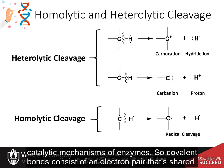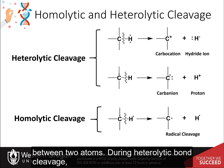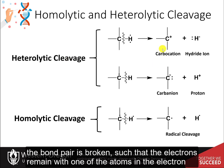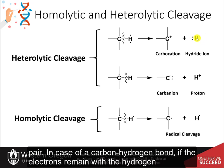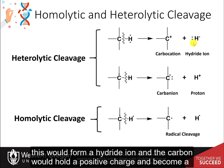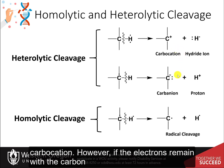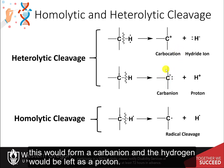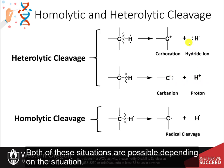Covalent bonds consist of an electron pair shared between two atoms. During heterolytic bond cleavage, the bond pair is broken such that the electrons remain with one of the atoms. In a carbon-hydrogen bond, if the electrons remain with the hydrogen, this forms a hydride ion and the carbon becomes a carbocation. If the electrons remain with the carbon, this forms a carbanion and the hydrogen is left as a proton. Both situations are possible depending on the context.